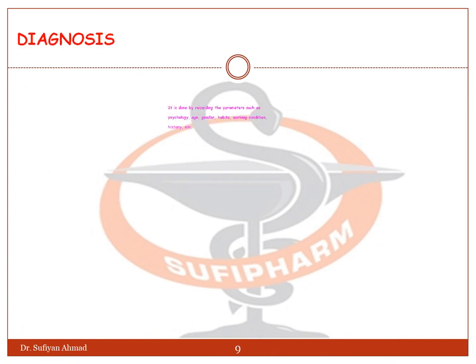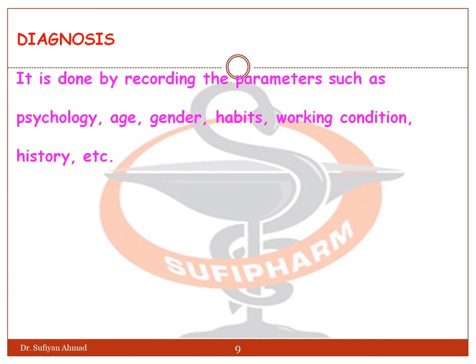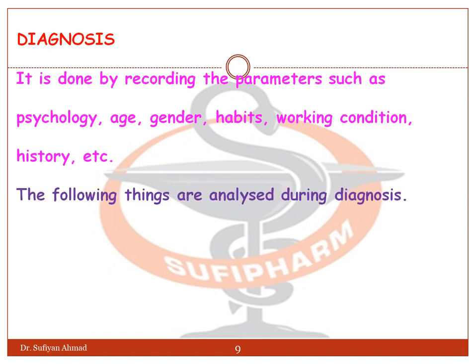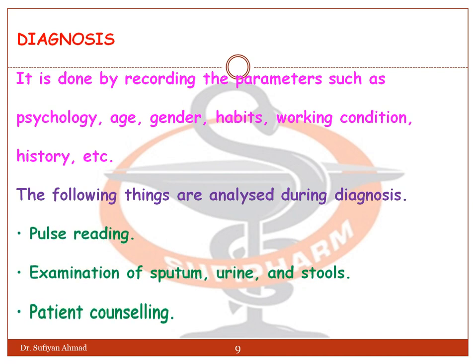Diagnosis is done by recording parameters such as psychology, age, gender, habit, working condition, history, etc. The following things are analyzed during diagnosis: pulse reading, examination of sputum, urine, stools, and patient counseling.